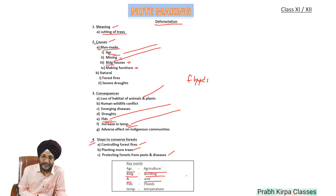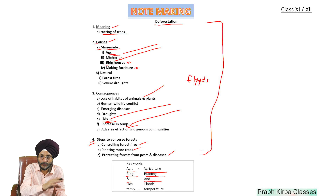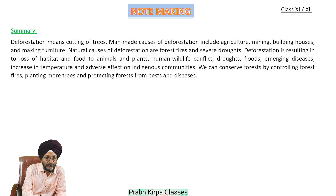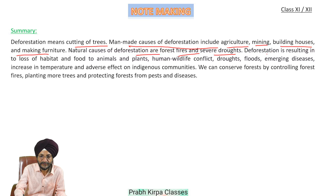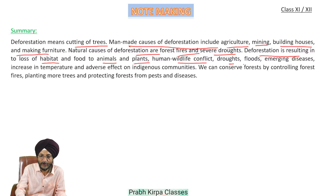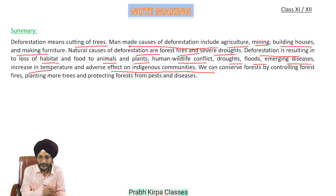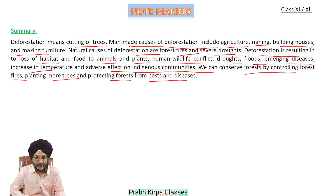Then, we will also have to write the summary only on the basis of all these headings, subheadings, and sub-subheadings mentioned in the note-making. Summary: Deforestation means cutting of trees. Manmade causes include agriculture, mining, building houses, and making furniture. Natural causes are forest fires and severe droughts. Deforestation is resulting in loss of habitat and food for animals and plants, human-wildlife conflict, droughts, floods, emerging diseases, increase in temperature, and adverse effect on indigenous communities. We can conserve forests by controlling forest fires, planting more trees, and protecting forests from pests and diseases.